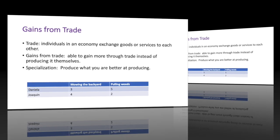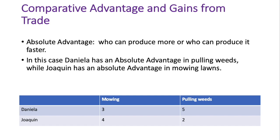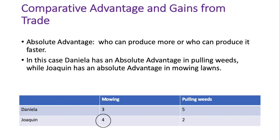The first thing we do is look at who has the absolute advantage — that is, who can produce more of a particular good. For mowing lawns, Joaquin can mow four lawns in an hour while Daniela can only mow three, so Joaquin has the absolute advantage in mowing lawns. For pulling weeds, Daniela has the absolute advantage because she can pull more bags of weeds in the hour than Joaquin can.